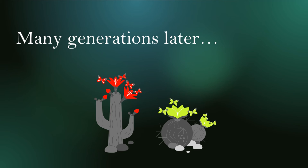Over time, any number of biological forces could act on the cacti and the insects, and many changes could occur in both insect populations. Since neither population is sharing genetic material, they will change in different ways, and it is possible that each species could co-evolve with their respective cactus. For example, the short cactus and its insect could co-evolve and change colour, while the tall cactus remains the same, so that at the next thousand-year event neither population is attracted to the other's cactus.